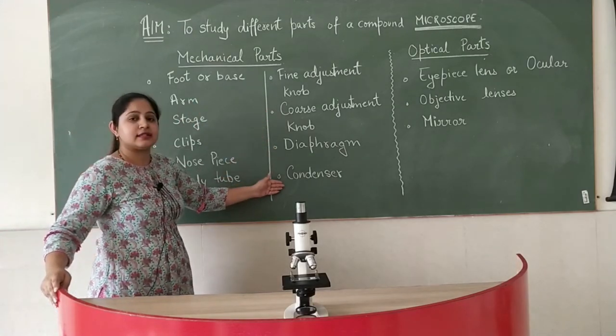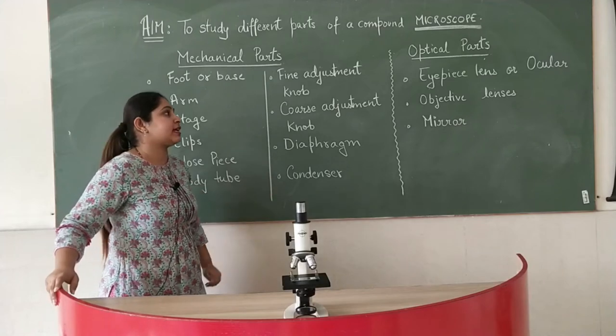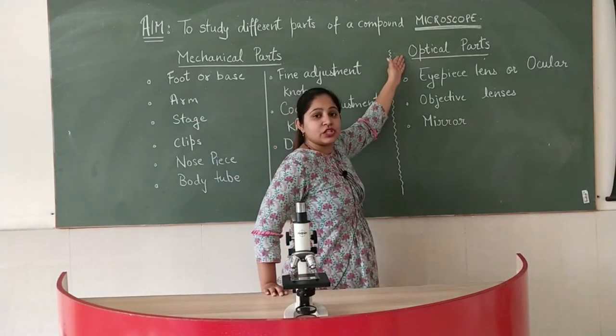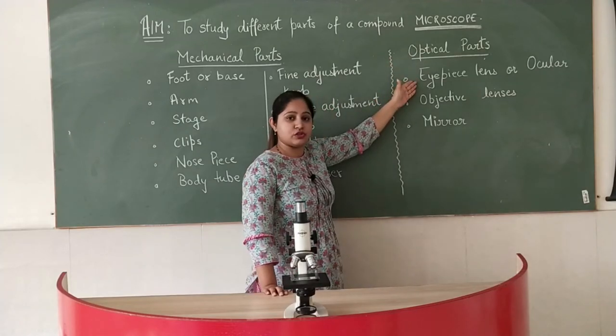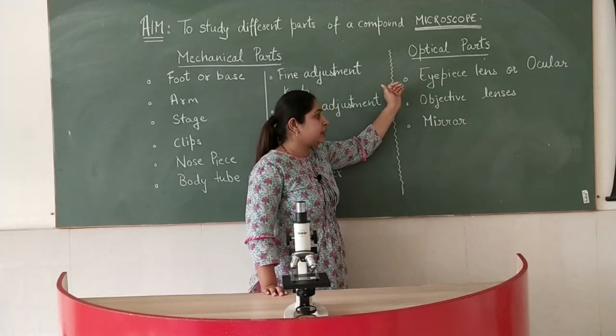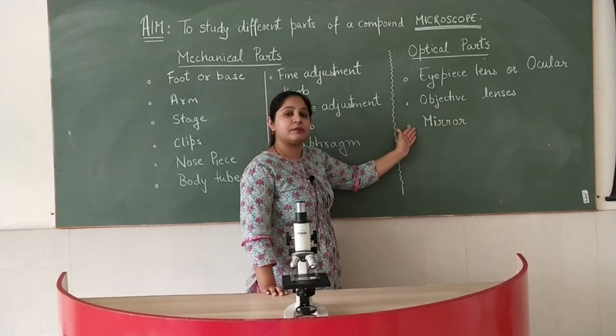And the second one is the optical parts which includes three major parts: one is the eyepiece which is also known as ocular, then we have objective lenses and mirror.